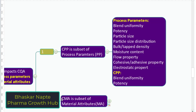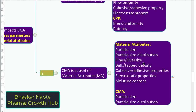The second influencing factor is critical material attributes, or CMA. The CMA is a subset of material attributes. Material attributes include particle size, particle size distribution, fines or oversize, bulk or tap density, cohesive-adhesive properties, electrostatic properties, moisture content, etc. But not all material attributes are critical material attributes. In this example, particle size and particle size distribution are the critical material attributes.